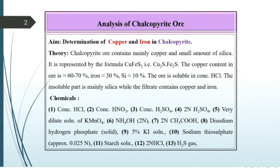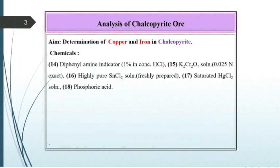Chemicals required: concentrated HCl, concentrated HNO3, concentrated H2SO4, 2-normal H2SO4, very dilute solution of KMnO4, NH4OH 2-normal, 2-normal CH3COOH, disodium hydrogen phosphate solid, 5% KI solution, sodium thiosulfate 0.025 normal approximate, starch solution, 2-normal HCl, H2S gas, diphenylamine indicator 1% in concentrated HCl.